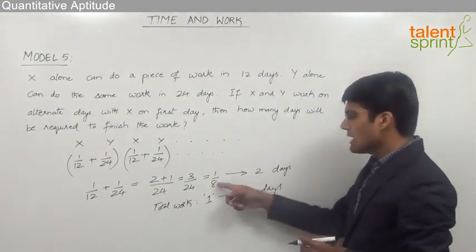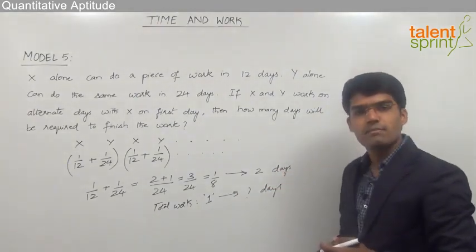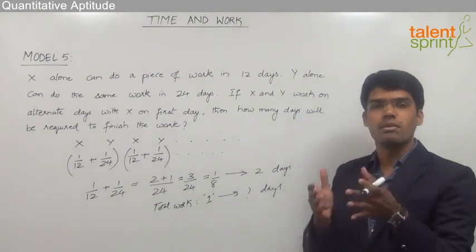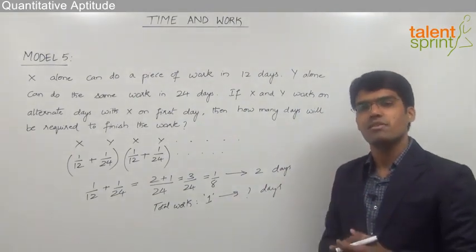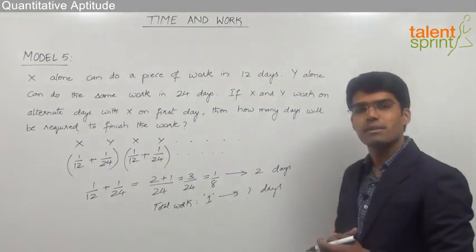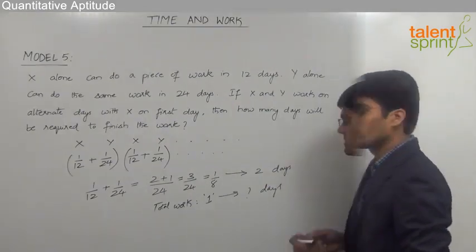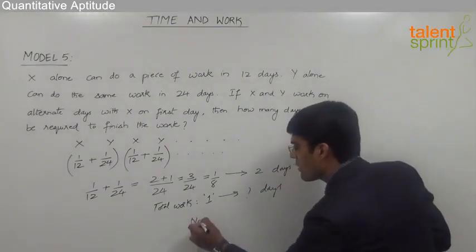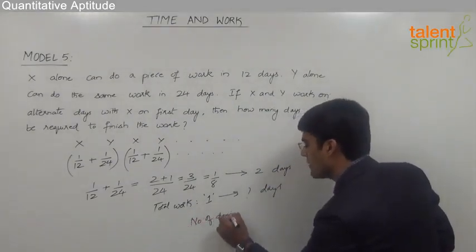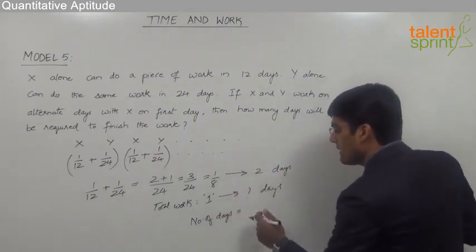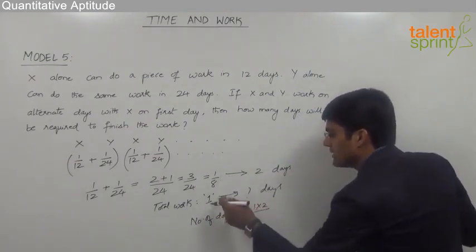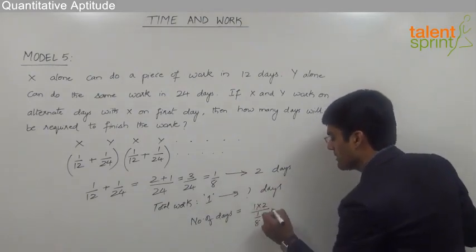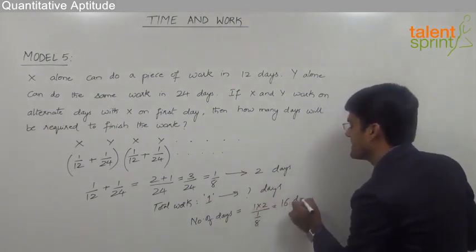Now as we know that work is proportional to the number of days, because when there is more work more number of days are required, less work less number of days are required. So we can simply cross multiply this and find out the answer. So we can say that the number of days required when X and Y work alternately will be 1 into 2 divided by 1 by 8, which is equal to 16 days.